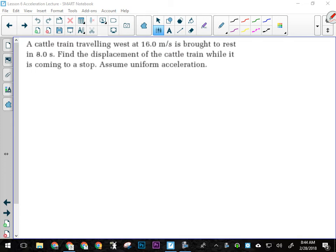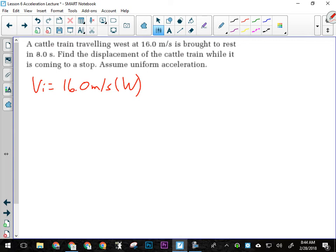In this question here, I have a cattle train that's traveling west at 16 meters per second is brought to rest in eight seconds. What three things did I just get there? I got VI: 16.0 meters per second west. It says it's brought to rest, so I know VF is zero. And they told me that that took eight seconds.